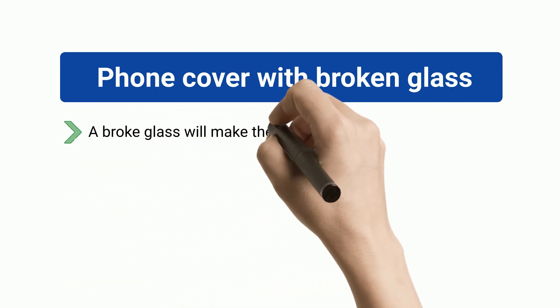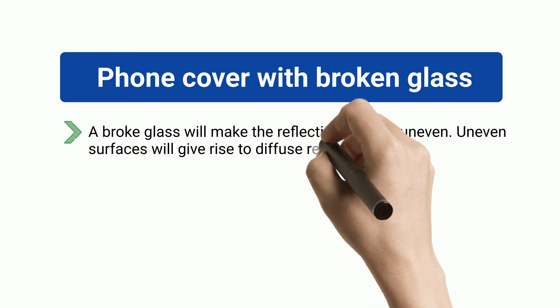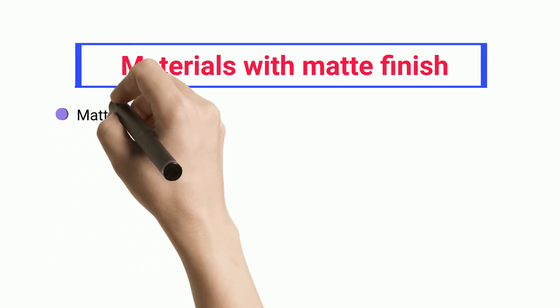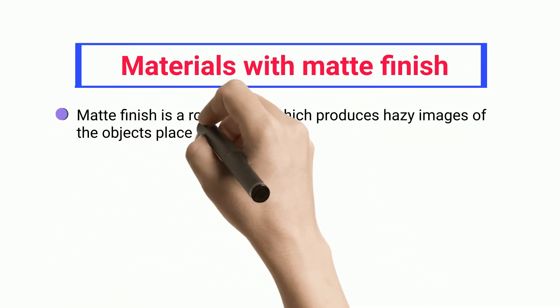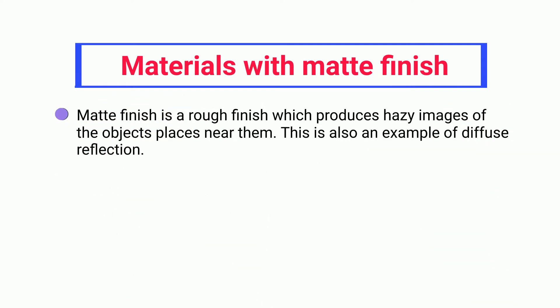Phone cover with broken glass: a broken glass will make the reflecting surface uneven, and uneven surfaces will give rise to diffuse reflections. Materials with matte finish: matte finish is a rough finish which produces hazy images of the objects placed near them. This is also an example of diffuse reflection.